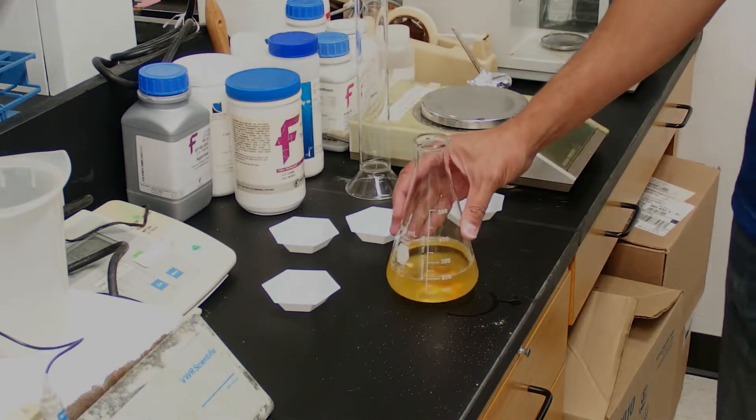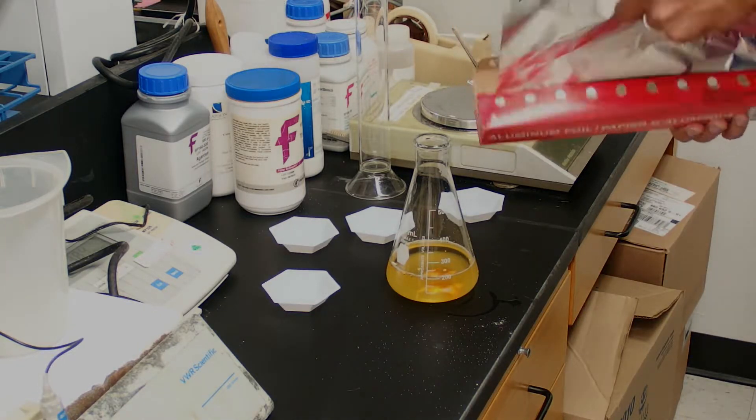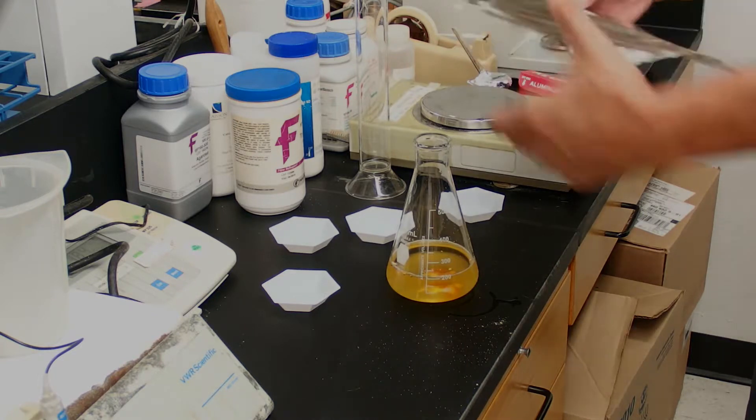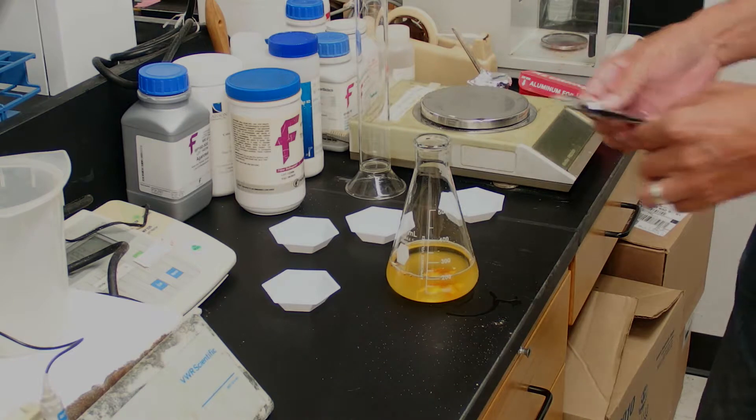Then we have to cover this with aluminum foil. We'll cover the mouth of that Erlenmeyer flask with the shiny side of the aluminum foil.